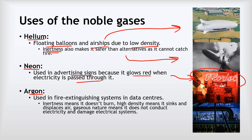The last example is argon. Argon is used in fire extinguishing systems — sometimes in handheld extinguishers, but more commonly in places like data centers where Amazon and Google have large racks of computer servers. If there's a fire there, you do not want to spray water because it would destroy the electrical systems. The inertness of argon means it doesn't burn, its high density means it sinks and displaces the air which puts the fire out, and being a gas means it does not conduct electricity — so it won't damage electrical systems. Argon is therefore a really good way of putting out fires in that kind of situation.